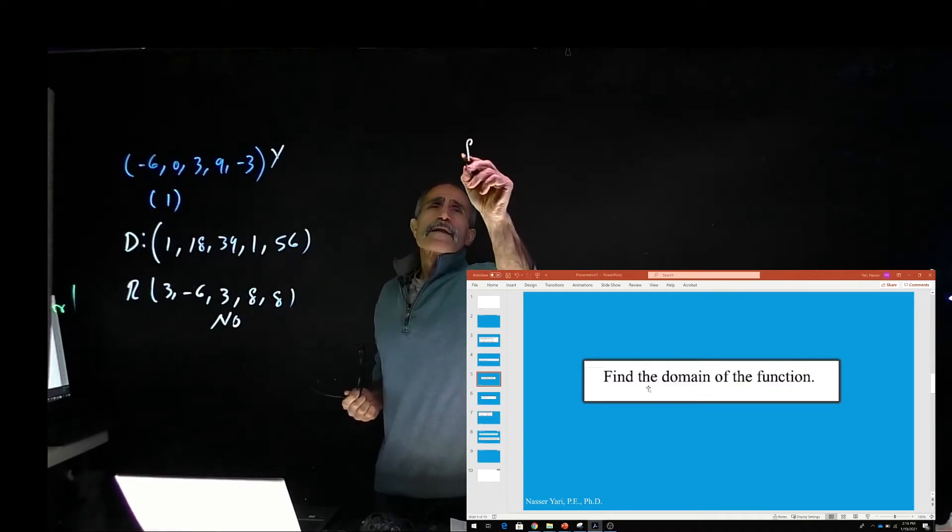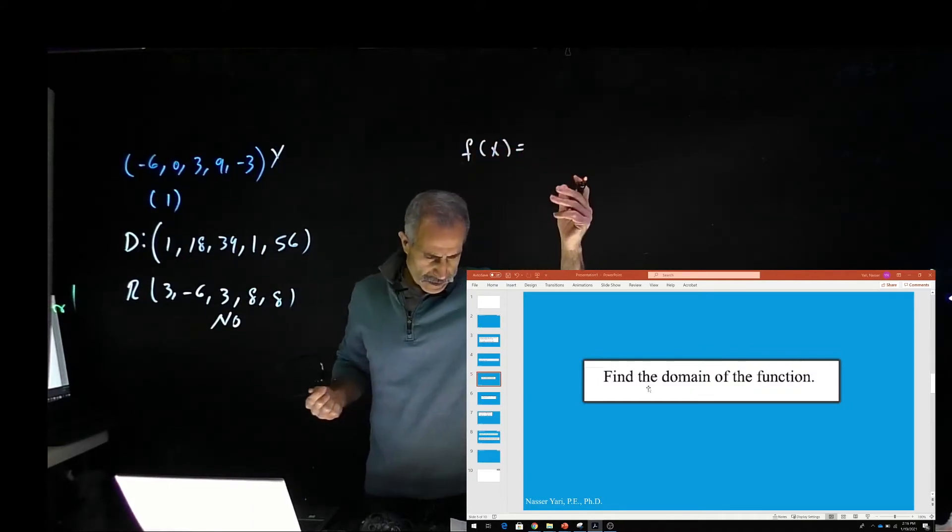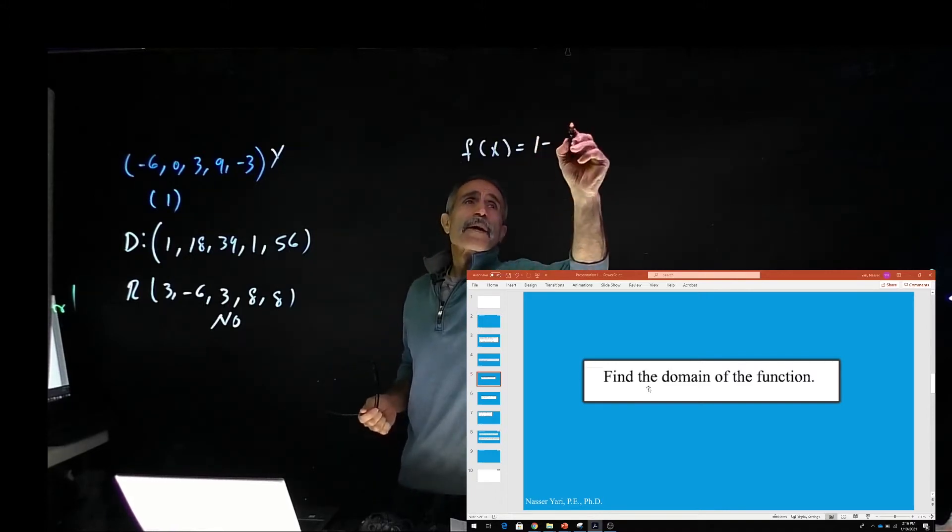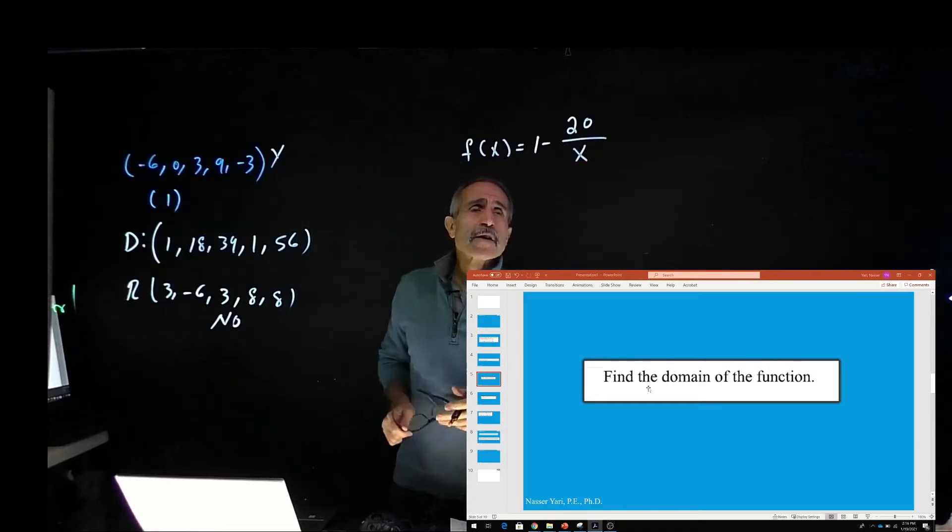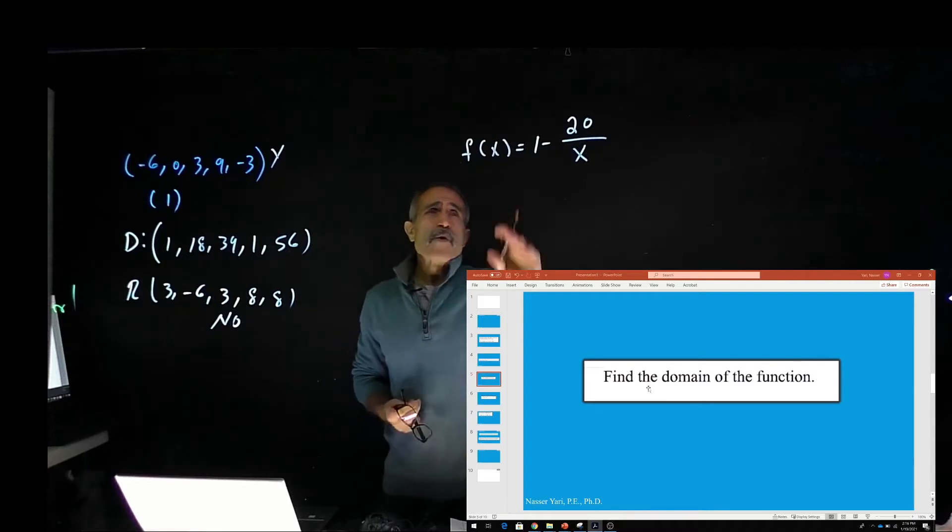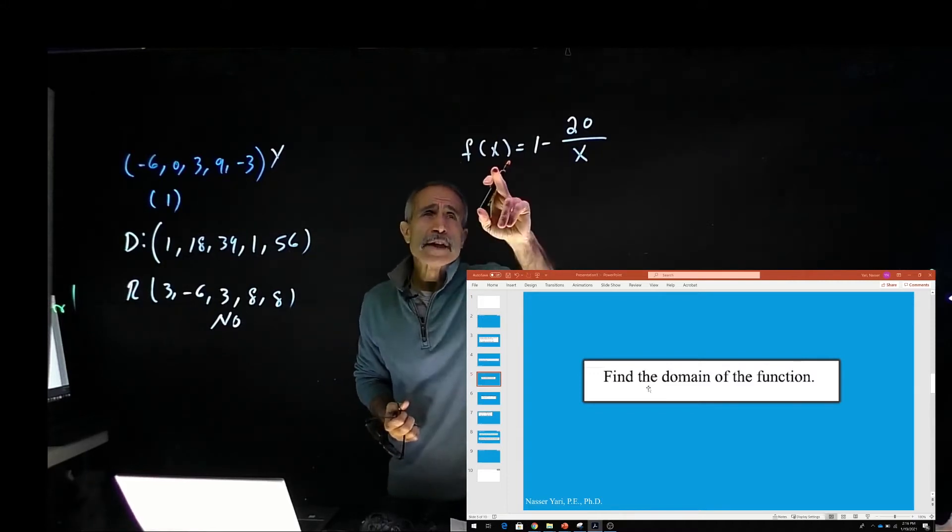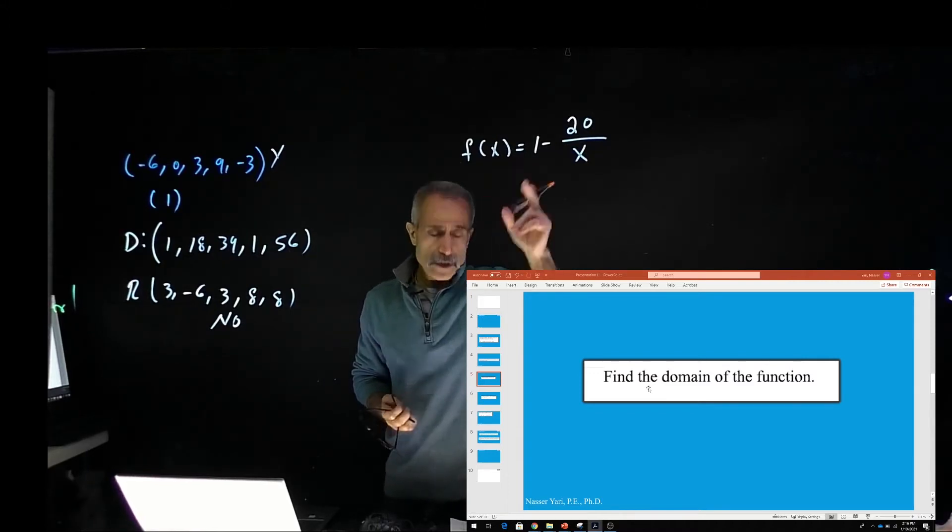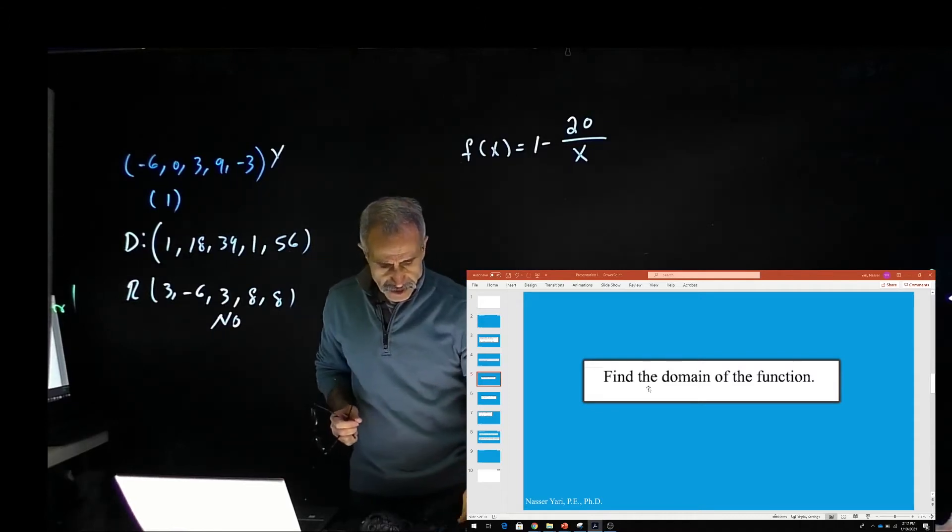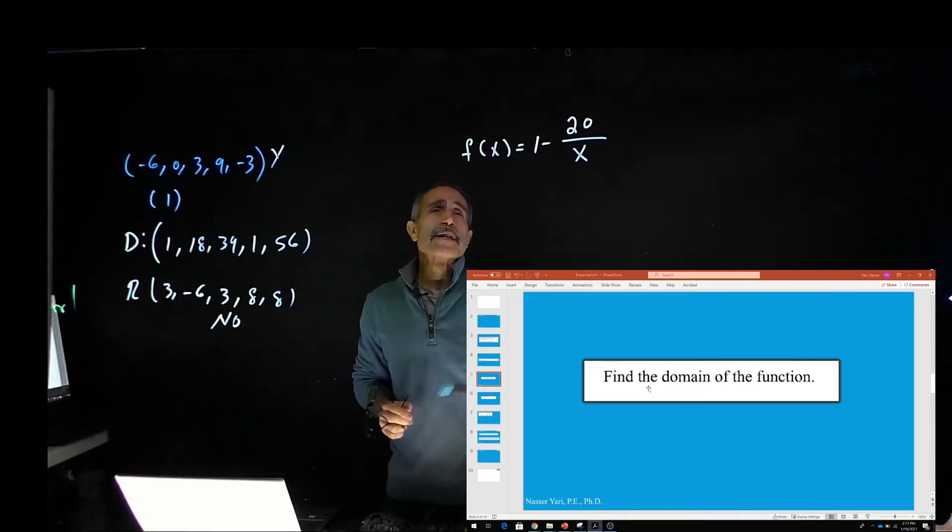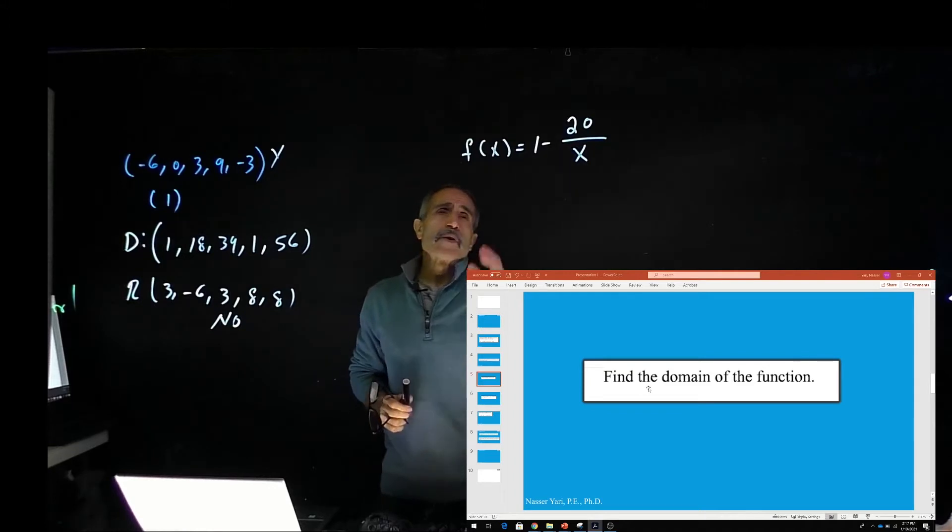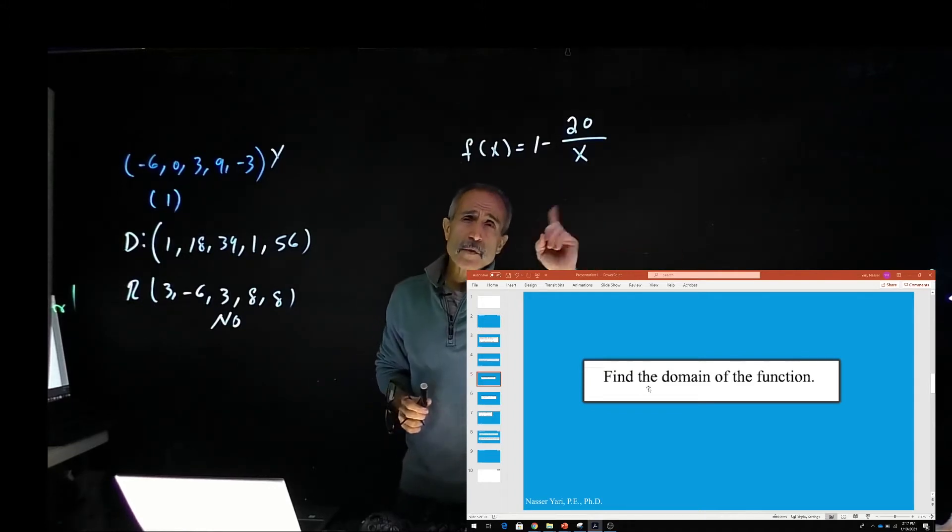All right, let's go to the next problem. f(x) is equal 1 minus 20 divided by x. We want to know what is the domain of the function. What kind of number I can put in here? That's what it's asking for. So I can say any number. I can put any number in there except what?